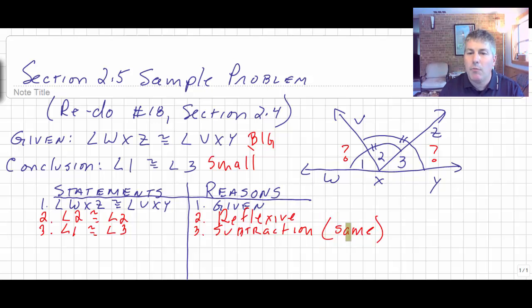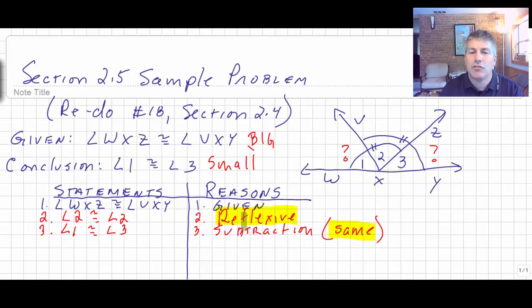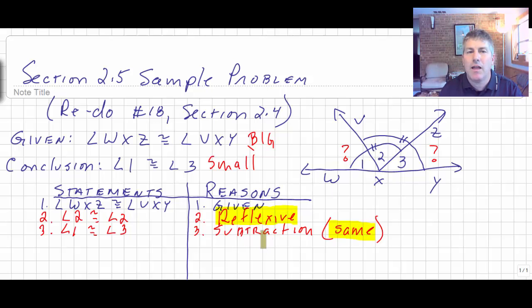Here's a helpful hint: anytime we're subtracting the same set of points, we are going to use reflexive. The same applies if we're adding the same set of points. So anytime it's addition or subtraction of the same, we're going to use reflexive, and you're going to tell me what set of points or what angle you're adding or subtracting. We'll see that quite a bit in our classwork and proofs, and we will practice this more when I see you in class.